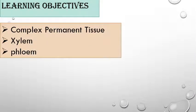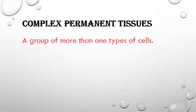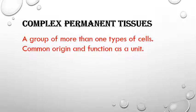Today's learning objectives: we will discuss about complex permanent tissue. Like simple permanent tissue which are made up of same kind of cells, complex permanent tissue is made up of more than one type of cells. They have common origin and function as a unit. The complex permanent tissues are xylem and phloem.